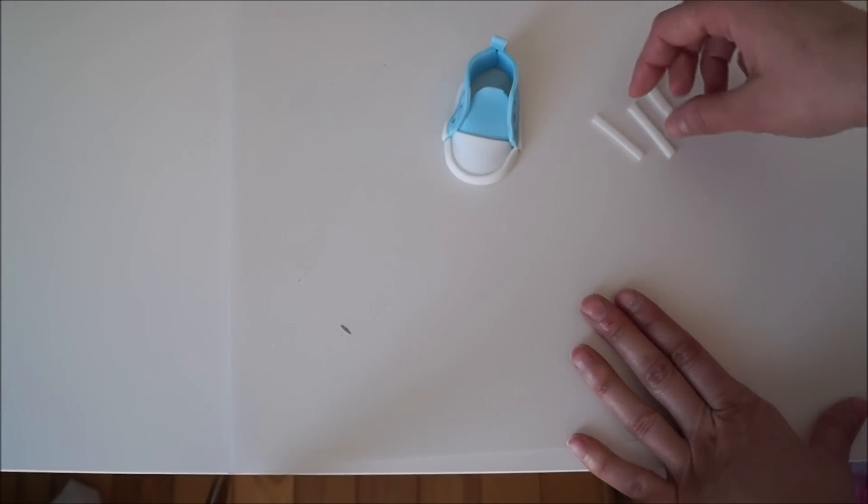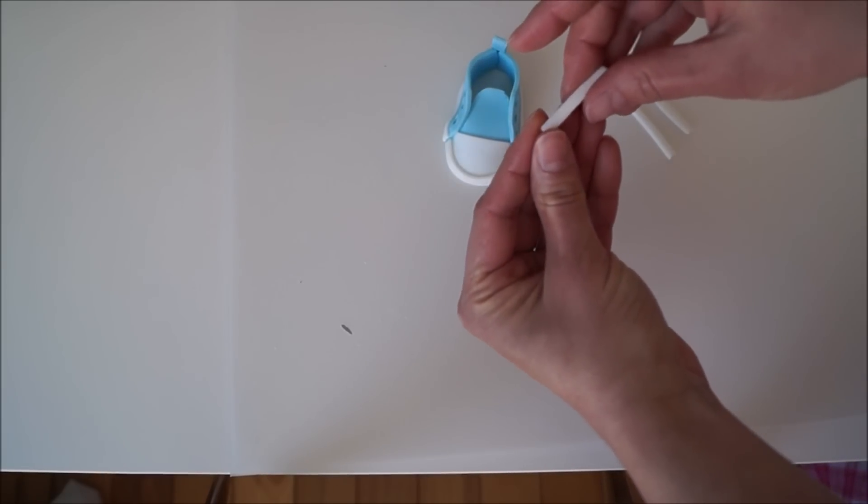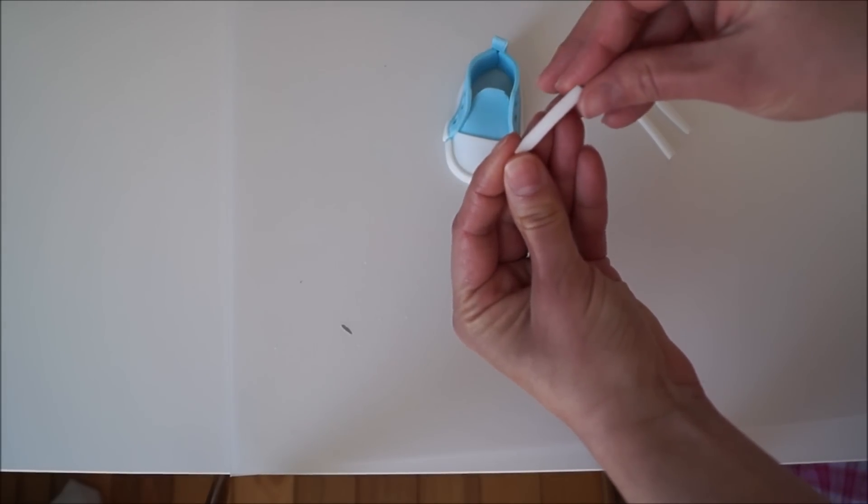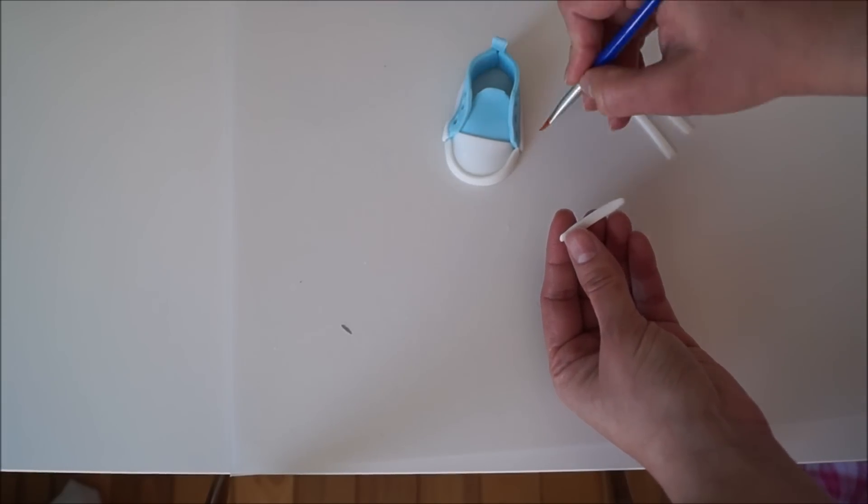To create the laces, cut out three stripes of white fondant. What I like to do to help me out is squeeze both ends, and this will help me to glue it to my shoes.